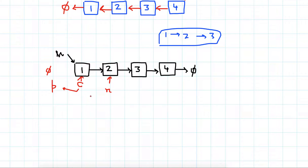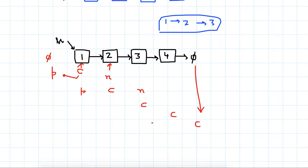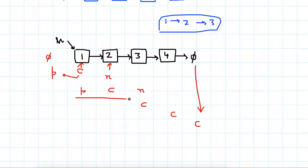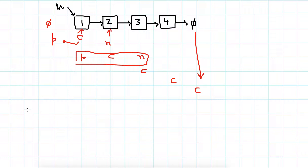We'll reverse the pointer and move forward. In the next iteration, current moves here, next moves here, and previous comes here. Then current goes to the next node, and finally current will reach null, so we stop there.